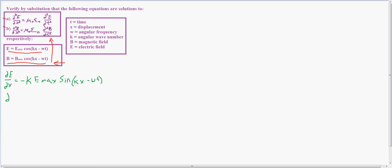And then I took the second derivative of that, which is negative k squared E max sine kx minus wt, and actually this should be cosine.